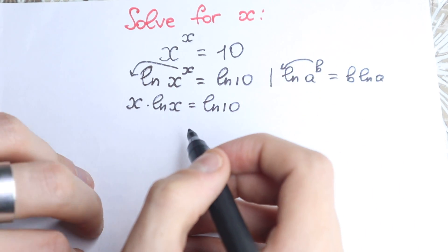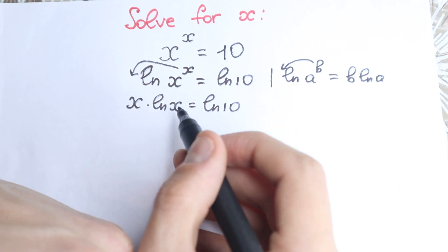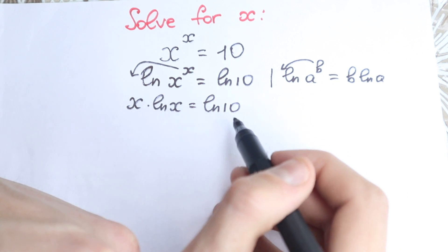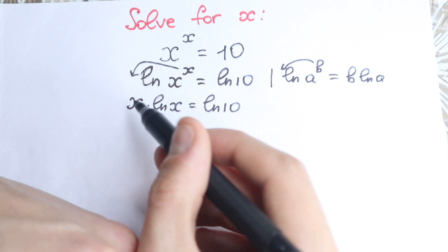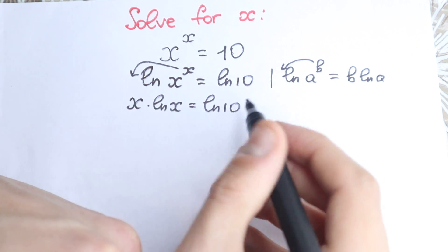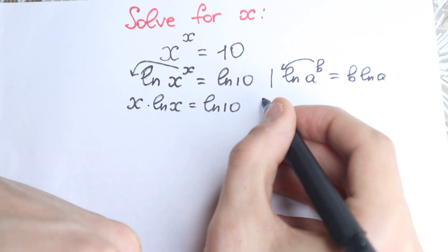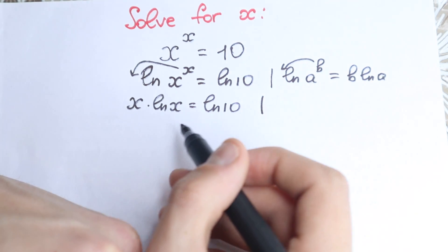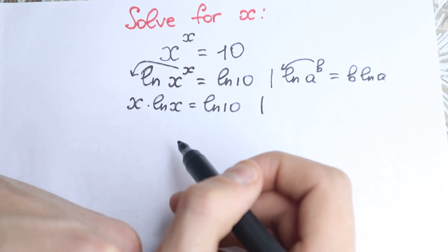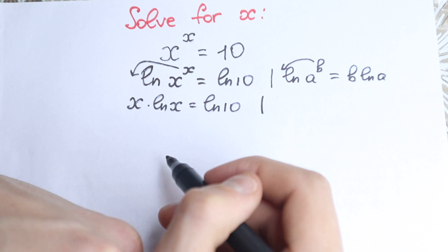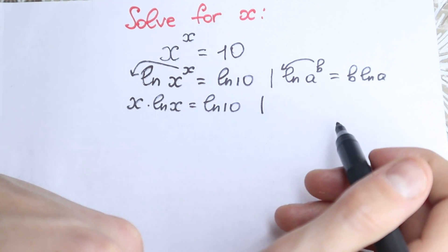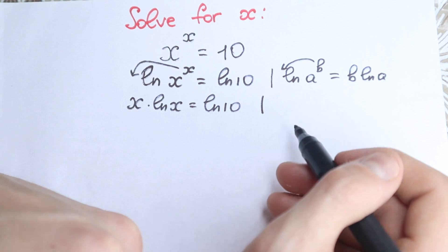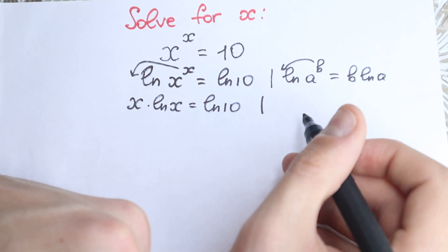A lot of students ask me why I do this, because right now we seem to have a more complicated expression on the left hand side — we have natural log, and on the right hand side we have three elements. But then I try to explain them: we need to know about one really interesting trick to continue solving it. We need to know about the Lambert W function.